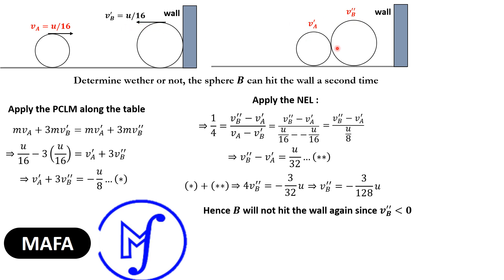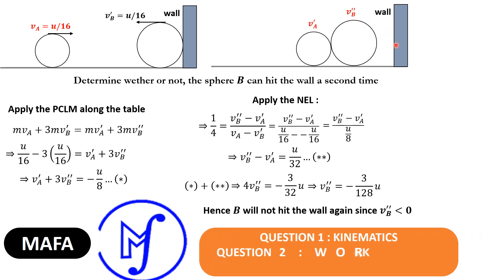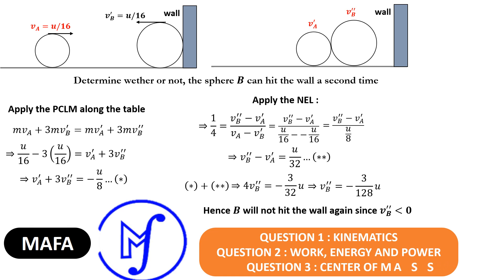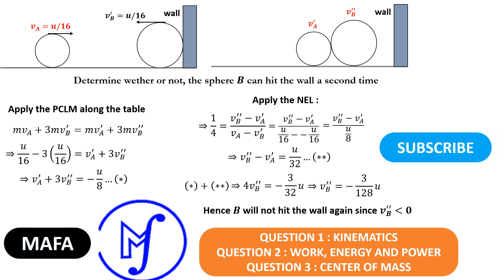Since vb'' = −3u/128 is negative, sphere B continues moving to the left and can never hit the wall again, as hitting the wall requires moving to the right. For those who have not watched the first, second, and third videos — covering kinematics, work-energy and power, and center of mass — the links are in the description. Please subscribe to the channel. Thank you guys for watching and see you in the next video.